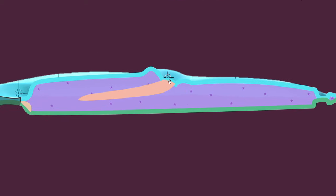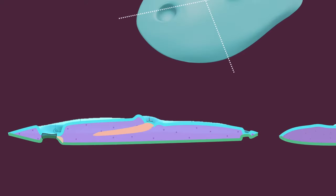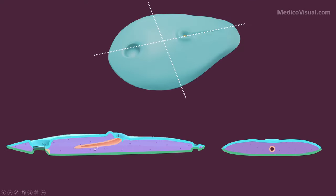Then what happens is that some of the central cells here will undergo programmed cell death, or apoptosis, and this notochordal process will undergo what we call canalization. As it undergoes canalization, a canal is formed within it — we call it the notochordal canal. In the center of this notochordal process there is a canal called the notochordal canal.